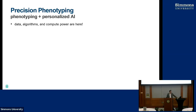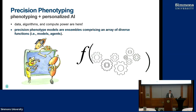What do we need? We need personalized AI. We have the data, we have the algorithms, and we have compute power. So in my model of what I call precision phenotyping, a precision phenotype model involves ensembles of different models. They can be rule-based models, they can be very simple models, but they can be agents. A precision phenotyping algorithm is curated by including several functions into one general algorithm.